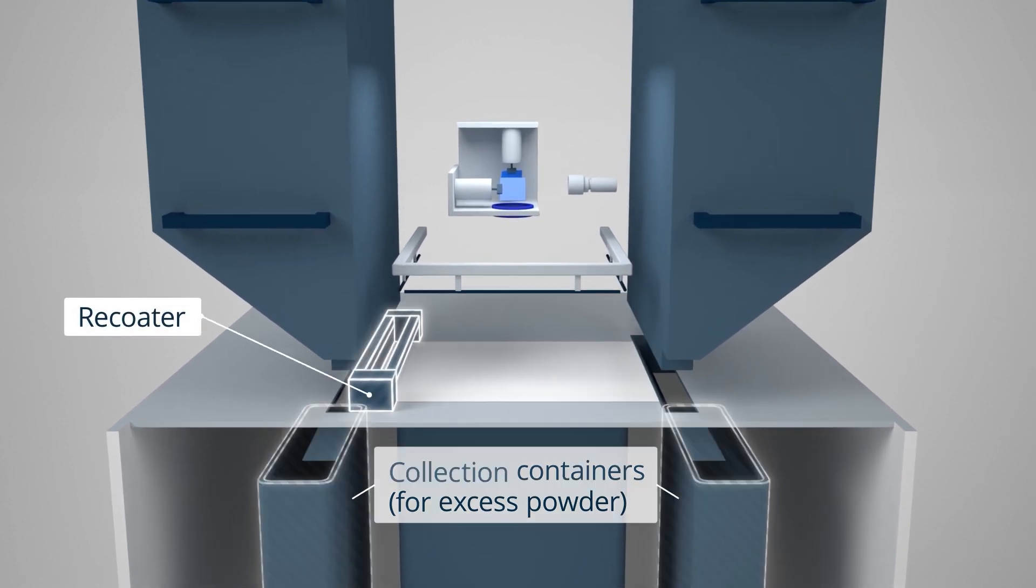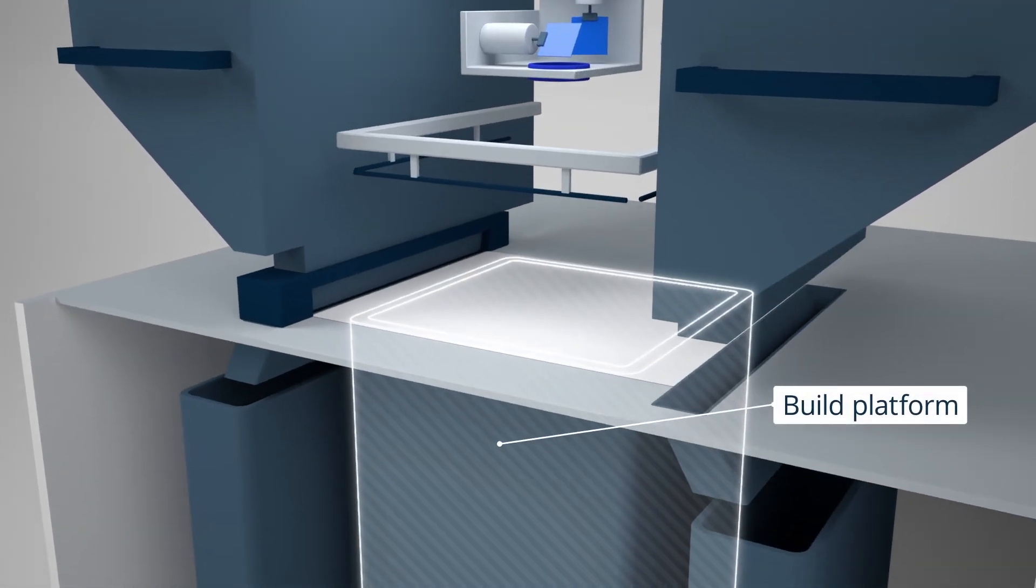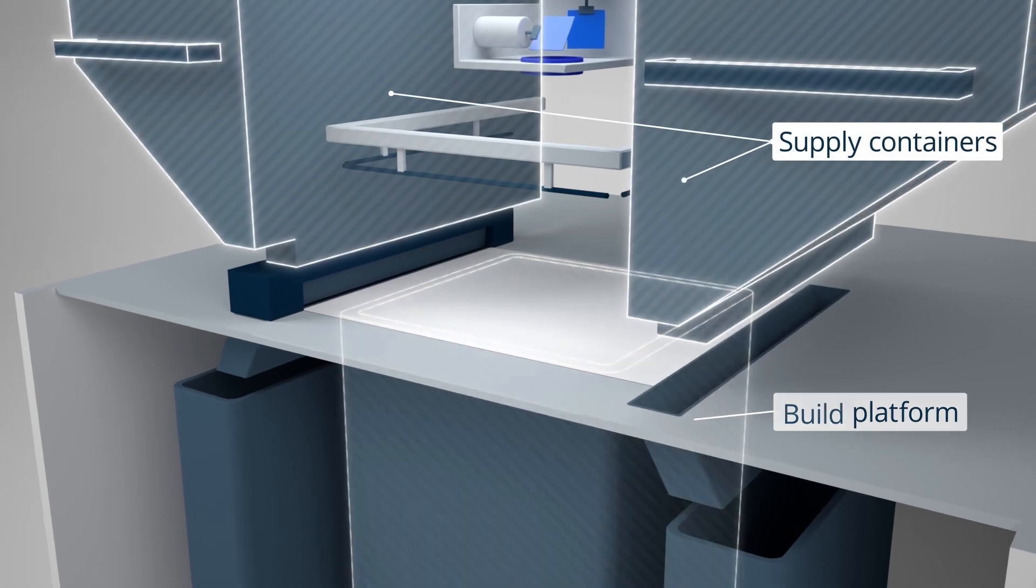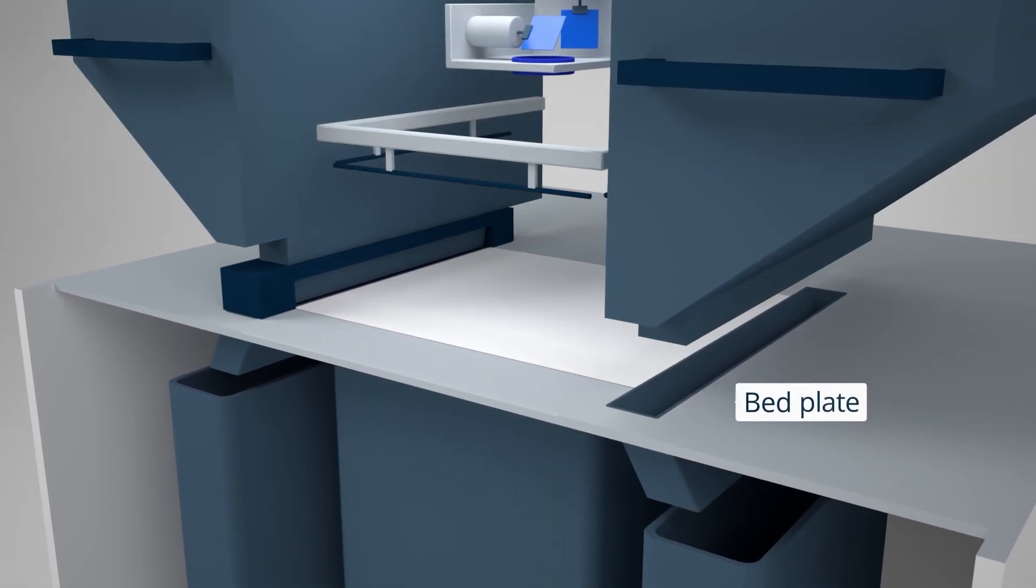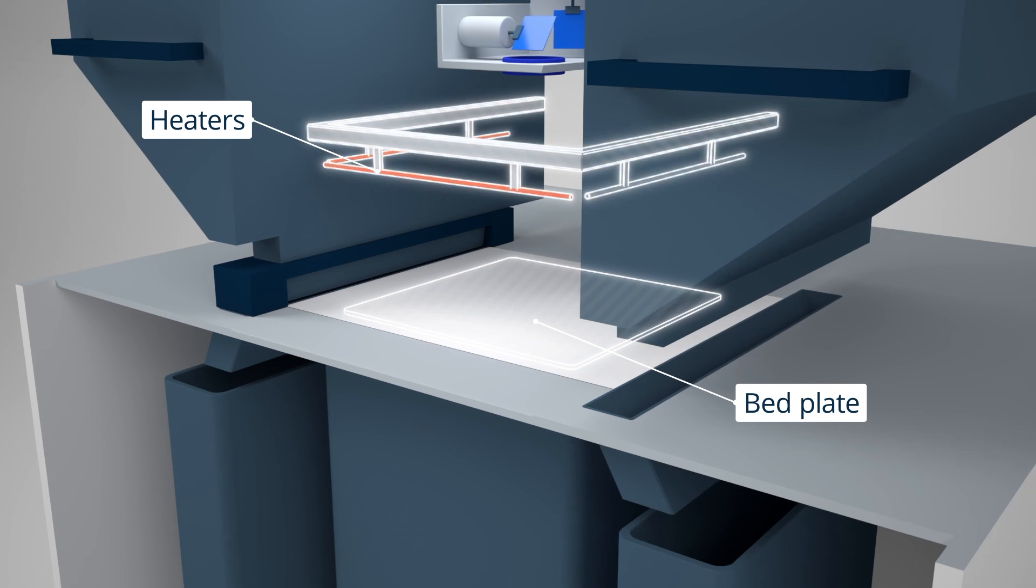A thin layer of the powder is distributed on top of the build platform from a supply container. The build chamber and bed plate are heated to just below the plastic's melting temperature.